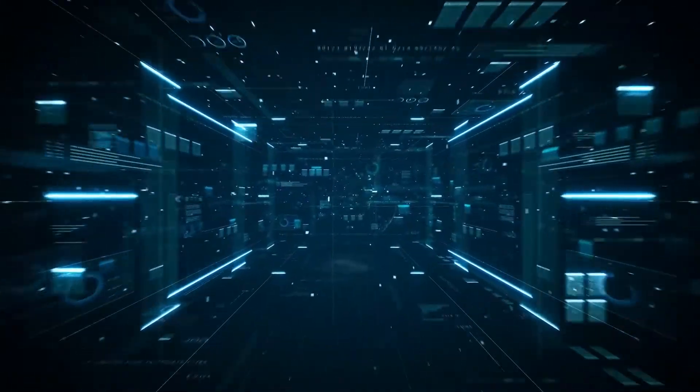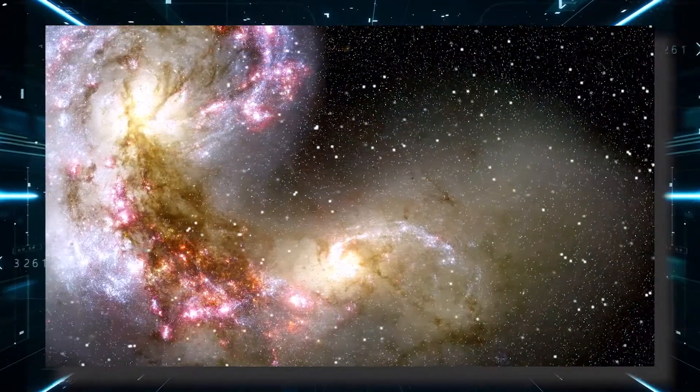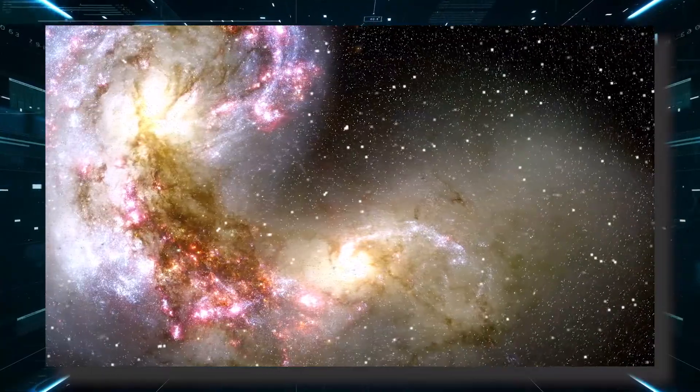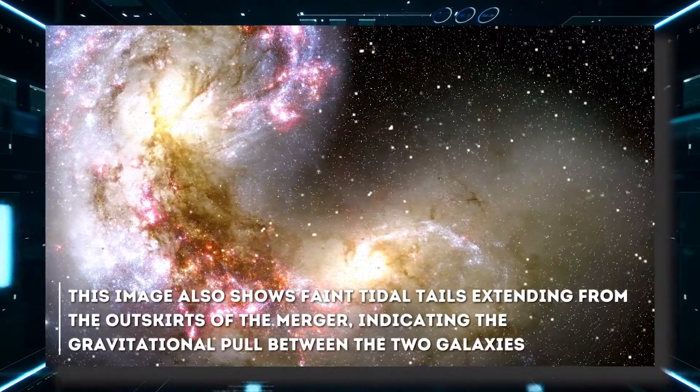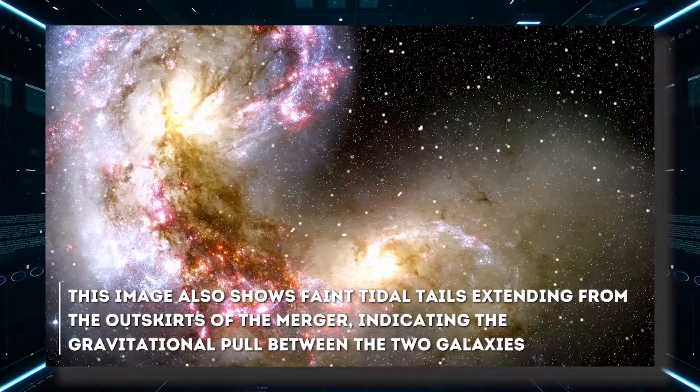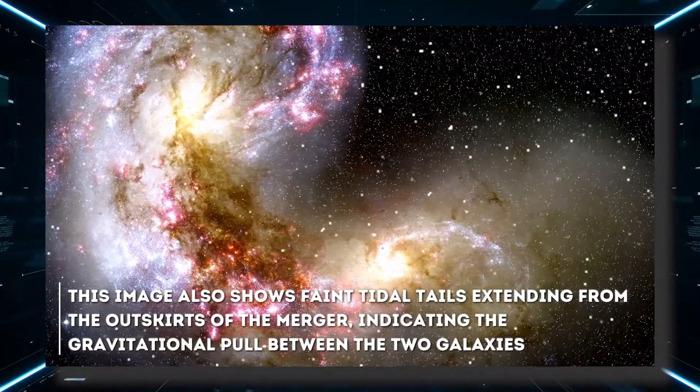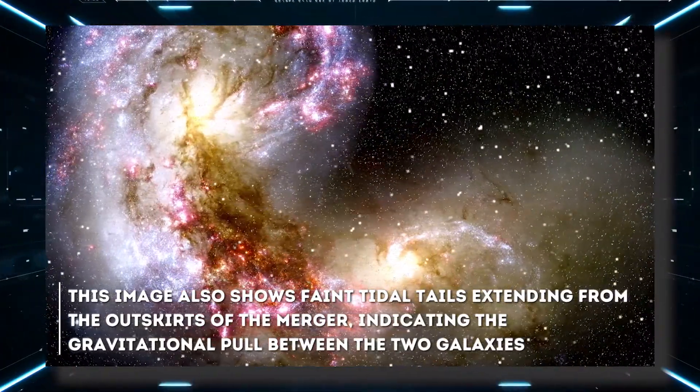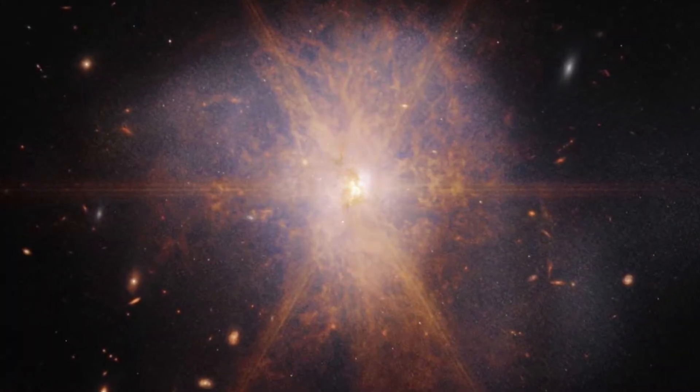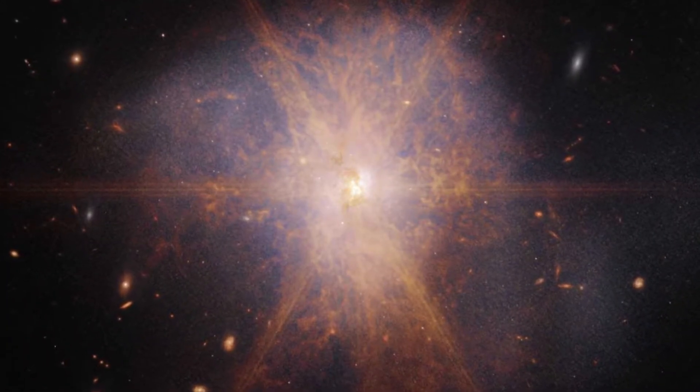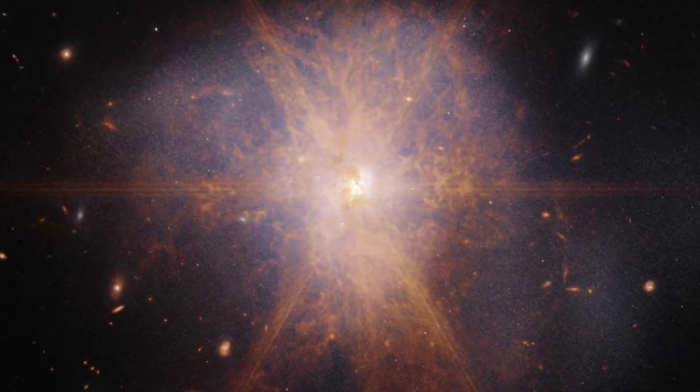The latest views from the James Webb Space Telescope show an impressive galactic merger of the two galaxies. This image also shows faint tidal tails extending from the outskirts of the merger, indicating the gravitational pull between the two galaxies. Finally, the reddish and orange streams represent organic materials scattered in ARP 220.